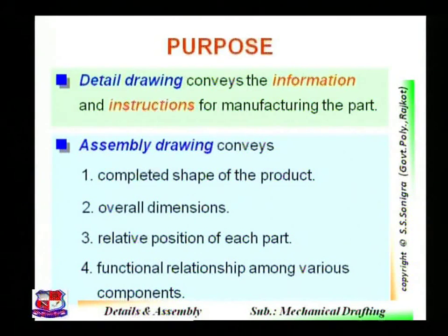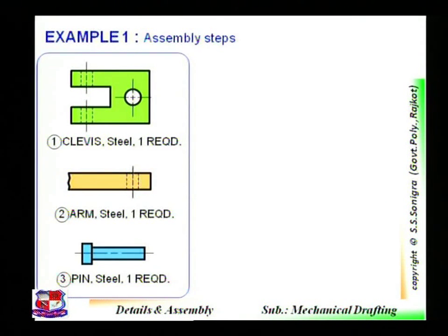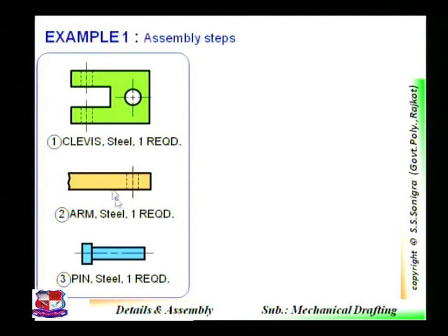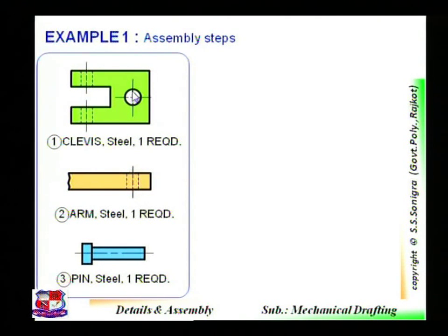Now, the first example shows how to assemble a part. Suppose three components are given: first is the clevis, made of steel, quantity one; second is the arm, made of steel, quantity one; and third is the pin, made of steel, quantity one. These three separate drawings are called detail drawings when all the dimensions — such as diameter, length, width, height, and thickness — are inserted in those components.